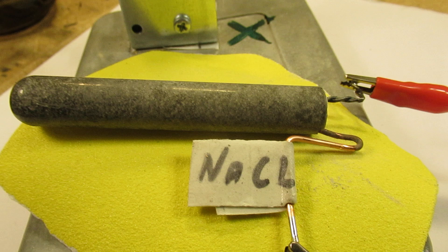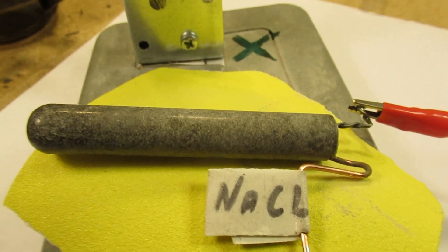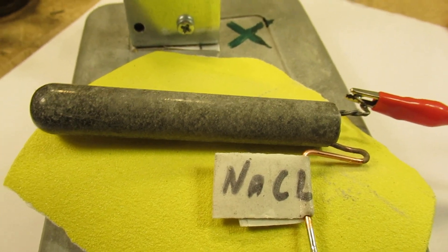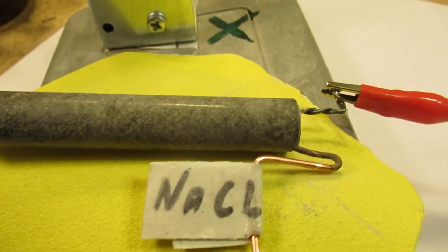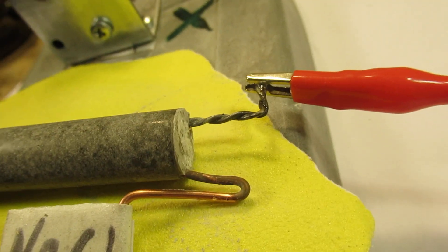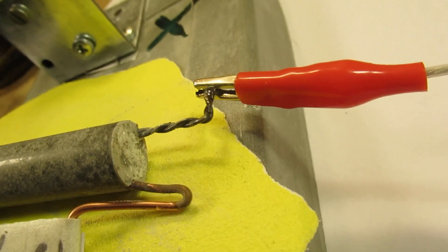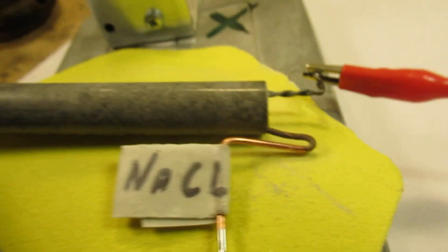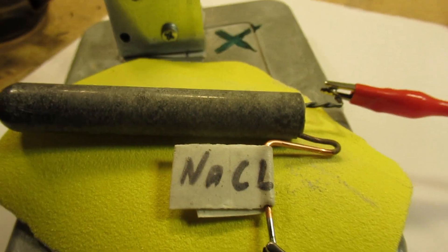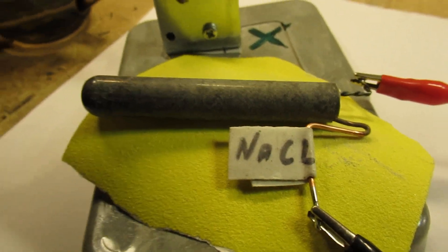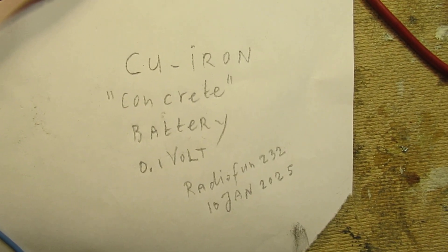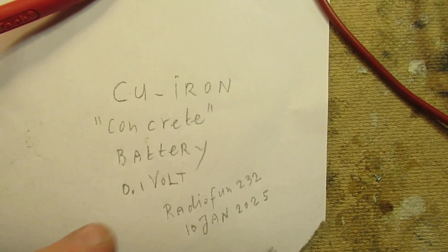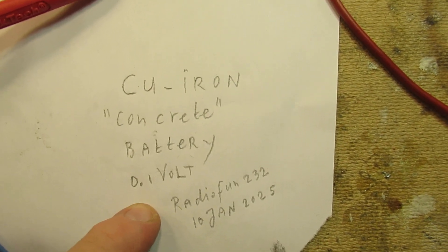I had not expected that in this case, when the concrete is completely cured and in a certain way dry, there must still be a movement of electrons between the two electrodes because I measure a voltage and even a quite constant voltage. So that's why I call this the cuprum iron concrete battery. It delivers 0.1 volts.